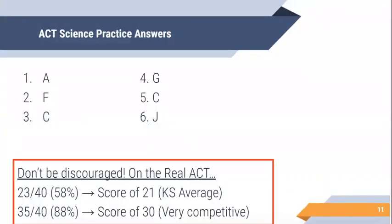Just to encourage you: if you're getting about half your questions right, a score of 58% on the real ACT science is a 21, which is about average in Kansas and good enough to go to a KU or K-State college. If you're trying to be more competitive, you need to inch up towards about 75 to 80% correct to get a higher score. Thank you for practicing today — I hope you have a great day.